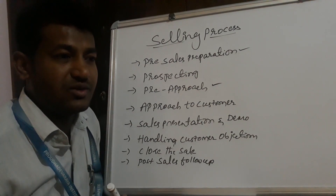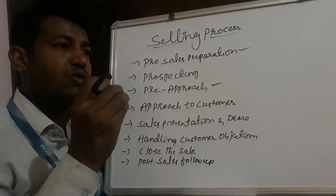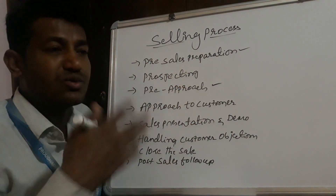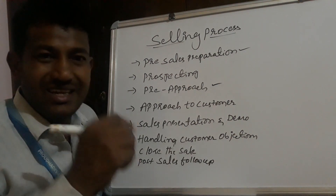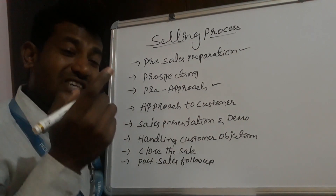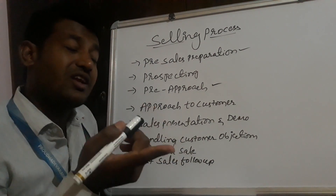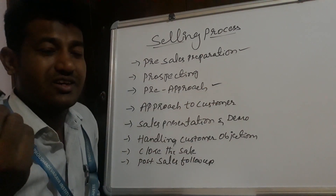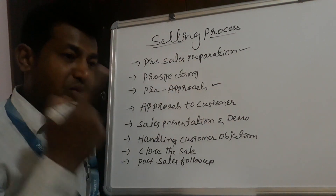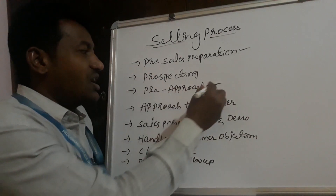For example, when you go for cold calling and you're selling an LED TV, you cannot just sell a single LED TV to one room. In the pre-approach process, you need to collect information about the lodge — how many rooms are there, so that you can sell to all the rooms, and how many lodges the owner has across his district or area. That way you can gather all the information and sell to all the lodges. You must have the idea of selling, and that particular idea comes only through this pre-approach.